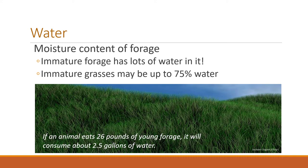There have been studies in the plains of Kansas and Oklahoma where beef steers graze the growing wheat crop early in the spring. They found that those young animals actually don't even need supplemental water — they're getting so much water from that young growing grass. Of course, most producers do provide water as a good humanitarian effort, but most of the water the animals get is right from the forage.